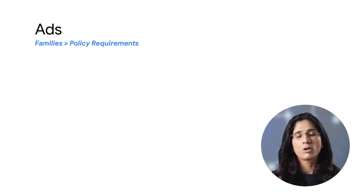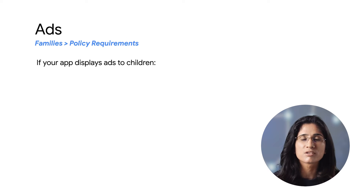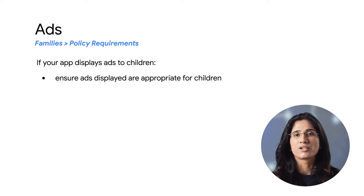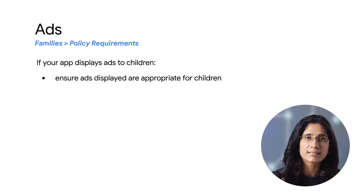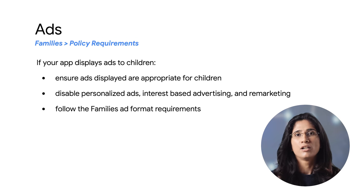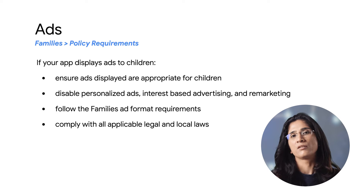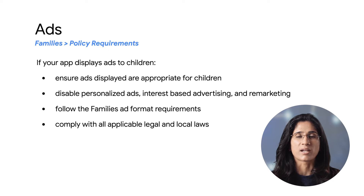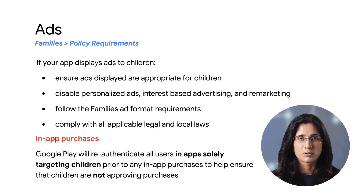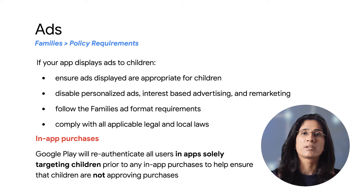Next is ads. Always consider your ad sources and ad content settings. If your app displays ads to children or to users of unknown age, you must firstly ensure ads displayed to those users present content that is appropriate for children. Secondly, disable personalized ads, interest-based advertising, or remarketing. Thirdly, follow the families ad format requirements. And lastly, comply with all applicable legal regulations and industry standards with regards to advertising to children. Also, Google Play will re-authenticate all users in apps solely targeting children prior to any in-app purchases, to help ensure that children are not approving purchases.